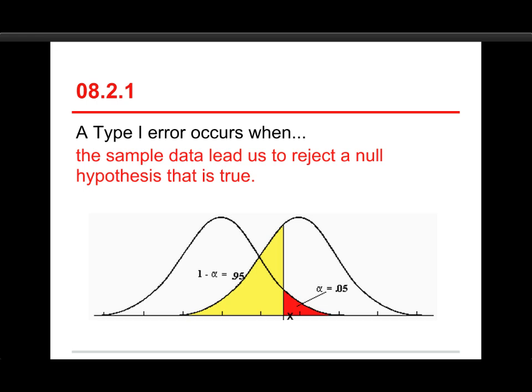So, here I've got two distributions. The one on the left is the null distribution. And so, that represents the range of possible sample means when nothing is happening, and the only variation is due to sampling error. And we're doing a little one-tail test here, and you see that the red part on the top, that's the top 5% of the distribution.